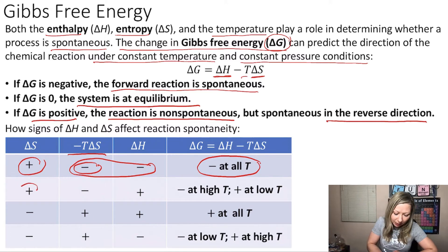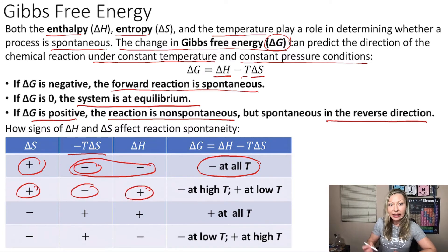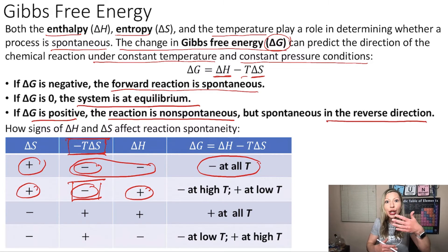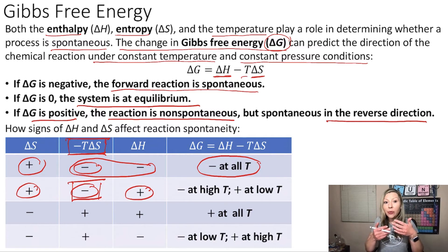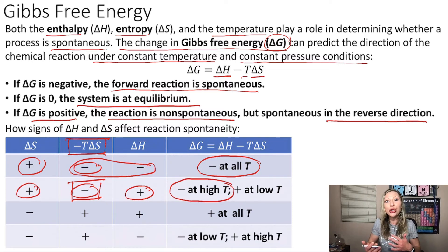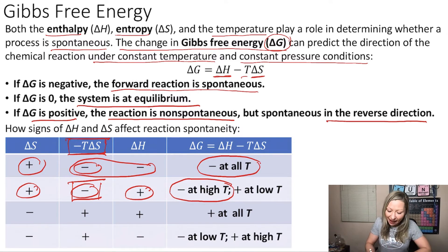If we keep ΔS positive, then minus T·ΔS is negative, but if ΔH is also positive, then at high temperatures this negative part — the minus T·ΔS — is going to be larger. So when I add the large negative value to a small positive value, I'm going to get a negative ΔG at high temperatures. However, if my minus T·ΔS is tiny at low temperatures, then my ΔG is going to be positive.